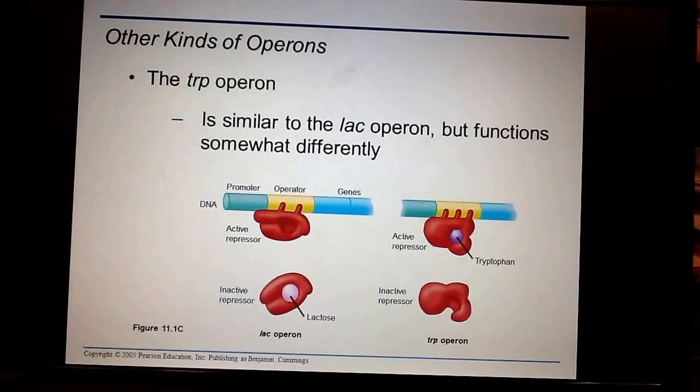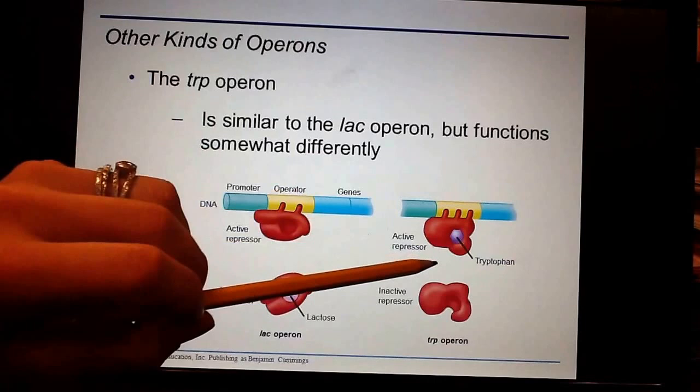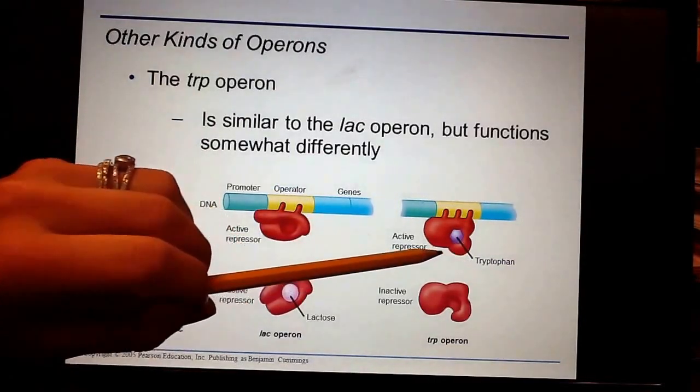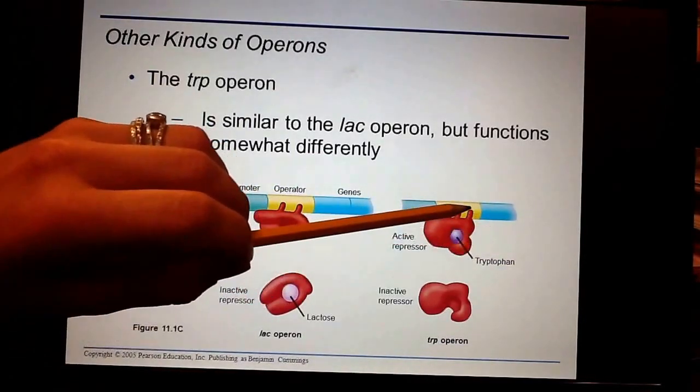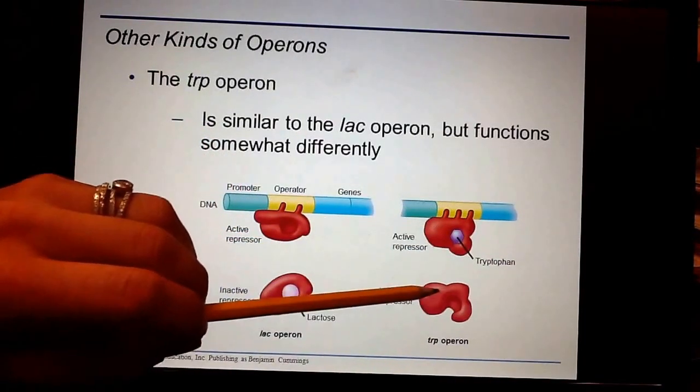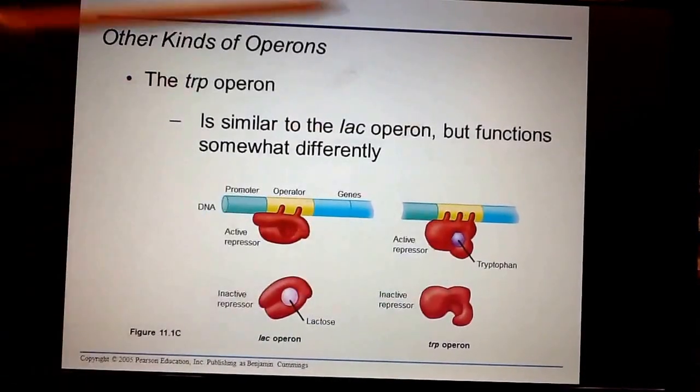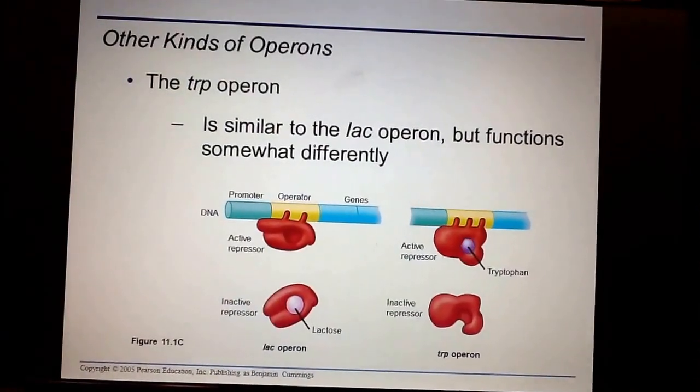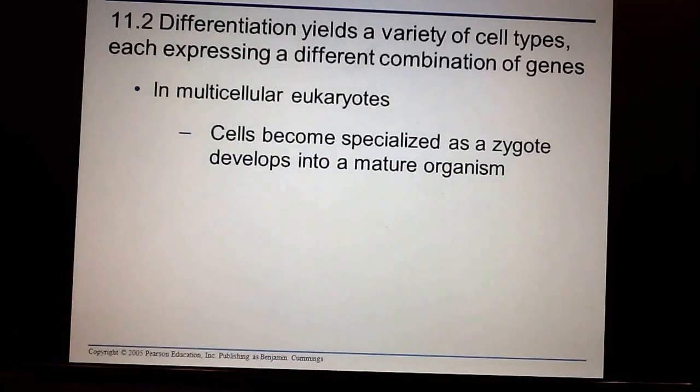There's another kind of operon and that's the TRIP operon. It functions differently. We have to memorize the LAC operon and then the TRIP operon. What's going on in the TRIP operon is the exact opposite. When there's tryptophan present in our body, we are actively repressing by binding to that operator. Whereas when there's no tryptophan in our body, the repressor is not the correct shape and it's unable to bind to the operator. By looking at these, what we can see is that we can control what things are being expressed or what genes are being made based on the production of other genes.